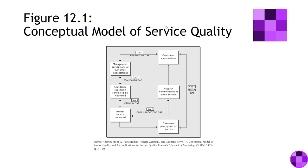The fundamental principle in the service quality model is that there are five possible places where you can have a gap between the delivery of a service in terms of expectation and perception. Gap one, the knowledge gap, is the gap between what the customer expects and what management thinks the customer will expect. Gap two is the gap between what management thinks the customer wants and the standards management sets in terms of specifying service delivery, creating a mismatch between objective and deliverable.